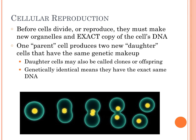Before cells divide, they have to make new organelles and exact copies of the cell's DNA. One parent cell produces two new daughter cells — starting with one cell and ending with two. The daughter cells can also be called clones or offspring. Genetically identical means they have the same DNA, so the DNA from the first cell has to be copied and split evenly between the two new cells in order for them to function properly.